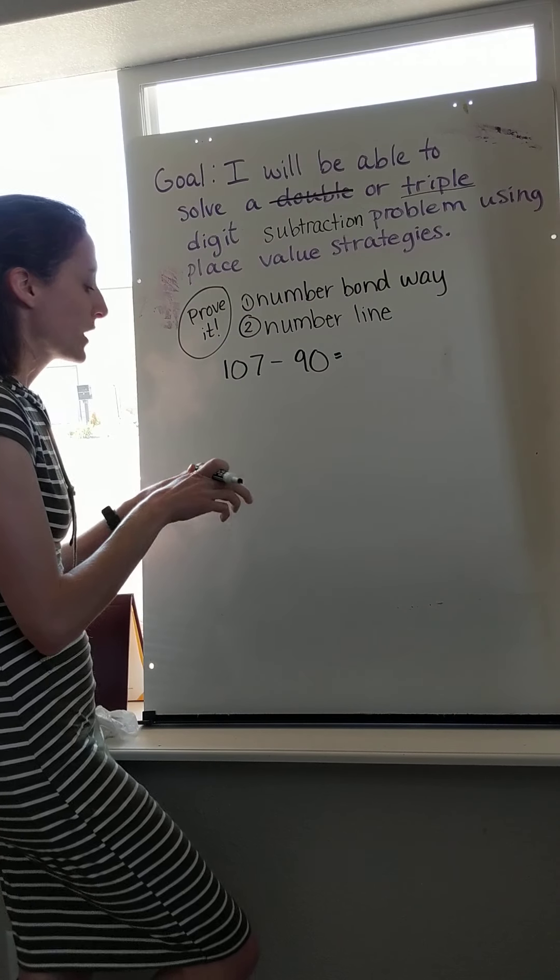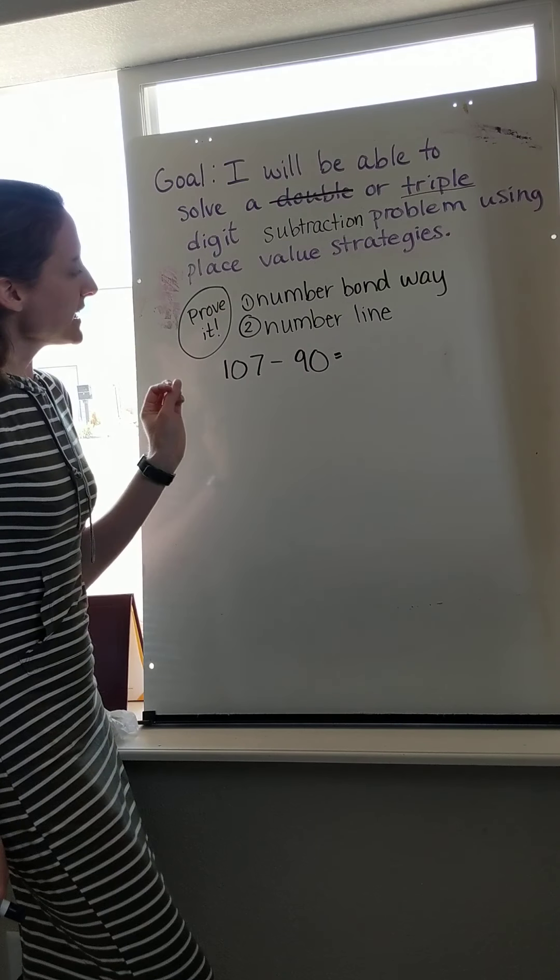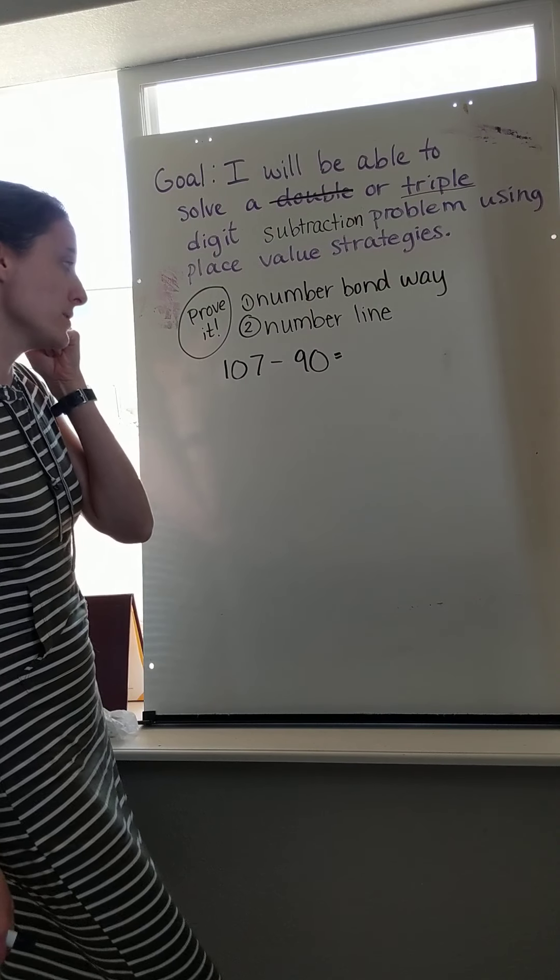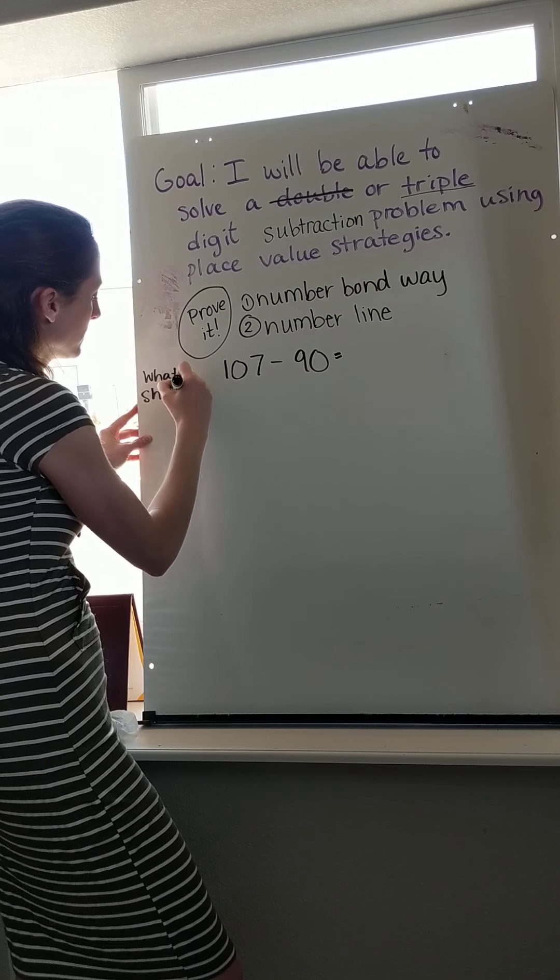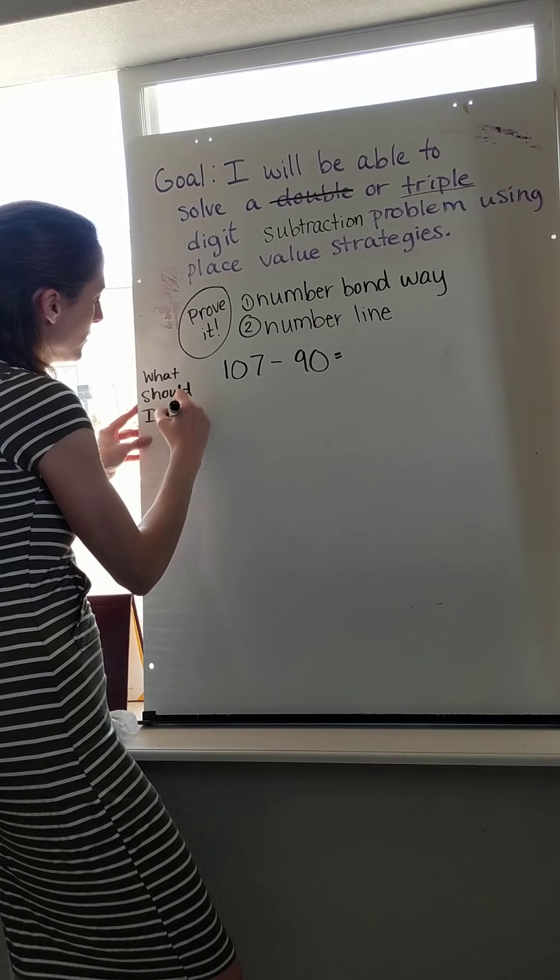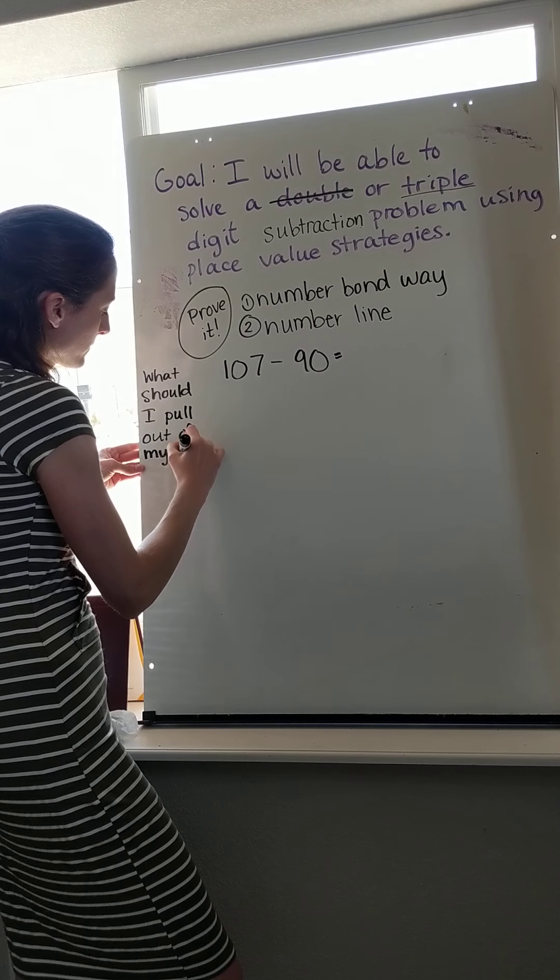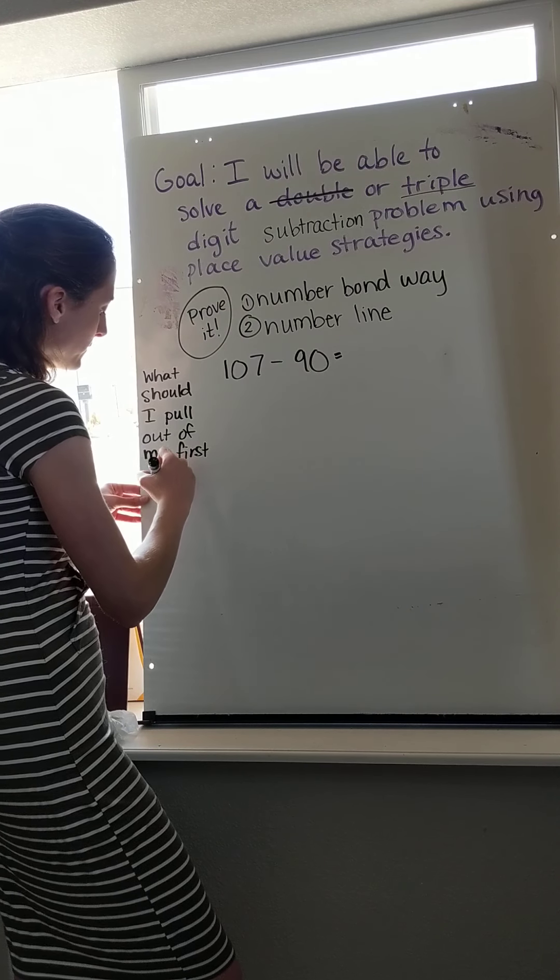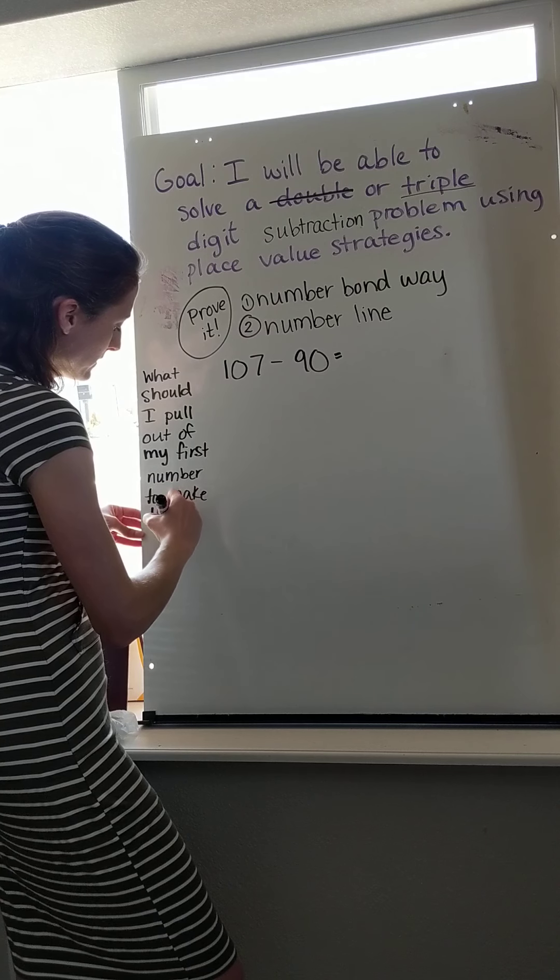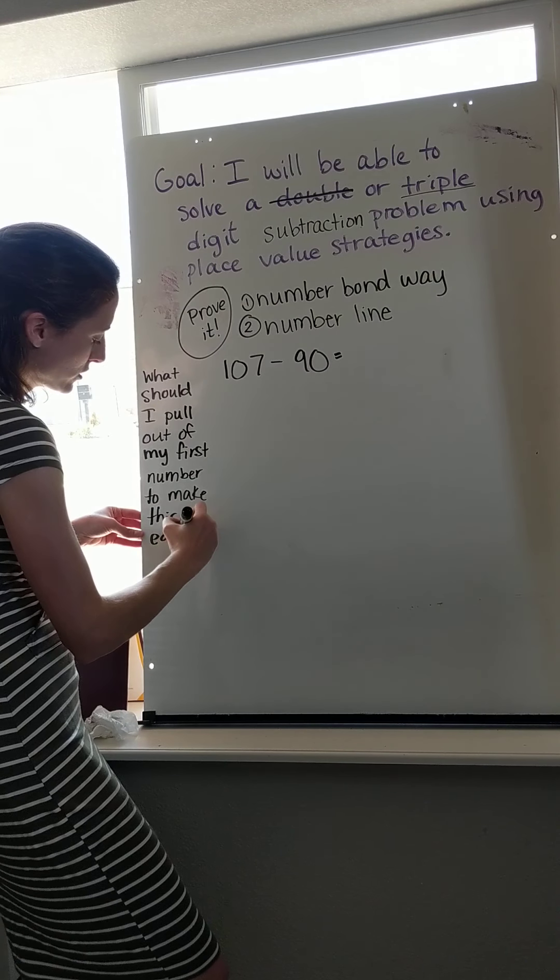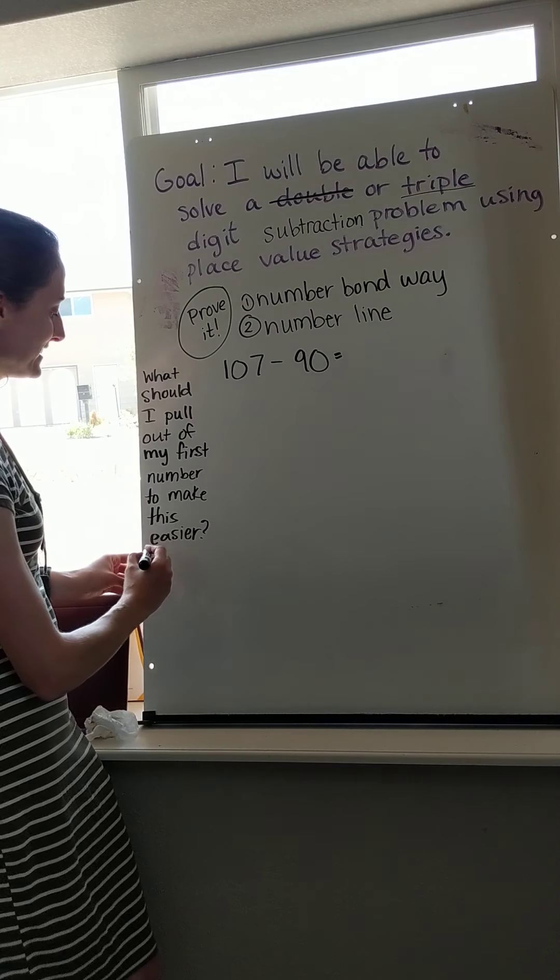Number bond way with this problem. So number bond way with subtraction is a little bit more complicated. Watch really closely. I am going to have to think. So my first thinking question is going to be, what should I pull out of my first number, which is my whole, my first number, to make this easier? So that's always the reason that we use the number bond way, is thinking, how can I make an easier equation?